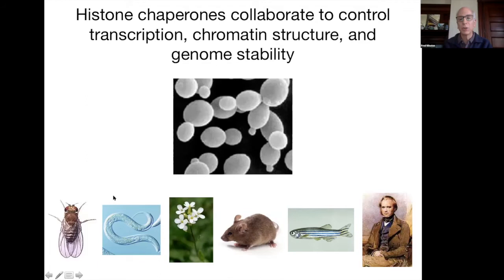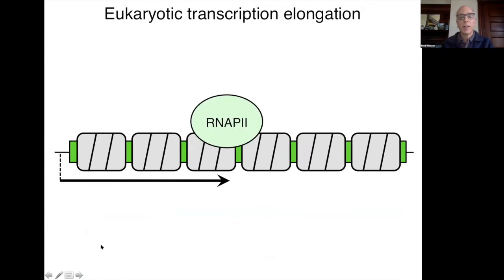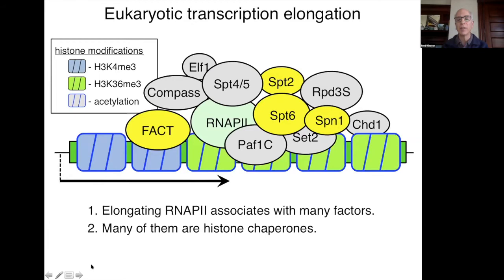As everybody knows, when transcription occurs on a chromatin template and RNA polymerase is moving down the template, it doesn't move by itself — it moves with a huge number of other factors. This slide shows just a subset of those factors; they associate dynamically, they come and go. Interestingly, while a lot is known about some of them, many are still mysterious in what they do. A big challenge to the field is to understand how all these factors work in a coordinated way to enable transcription elongation.